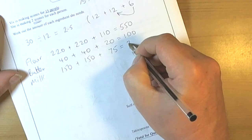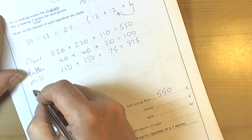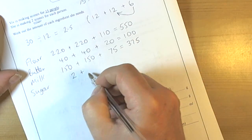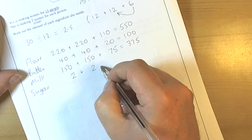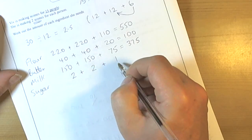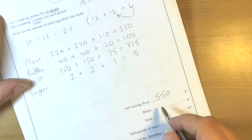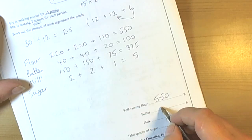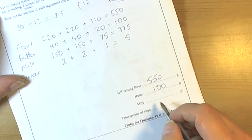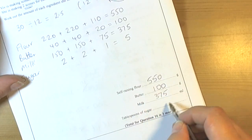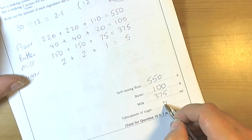And then for sugar it was two tablespoons for each recipe of 12. The half of two is one, so we need five spoonfuls of sugar. So butter we needed 100, milk we needed 375 milliliters, and sugar we needed 5 tablespoons.